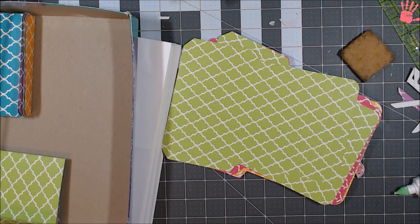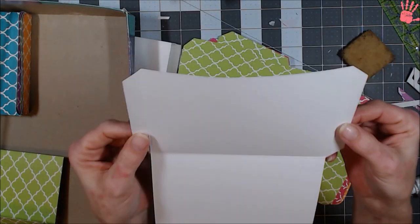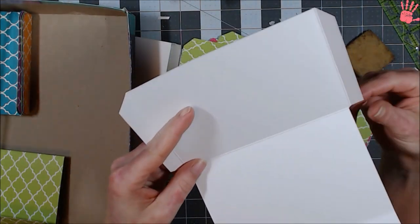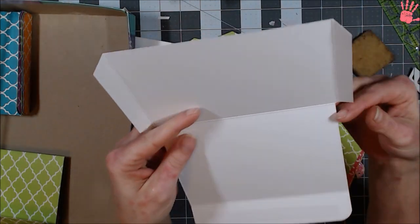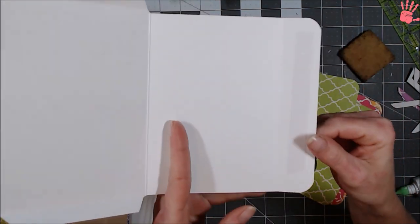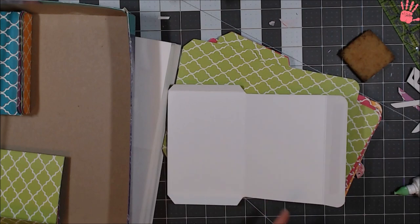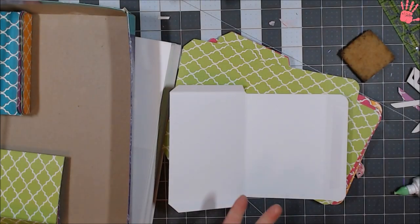And then I trimmed my edges. Trimmed the edge here and then I trimmed it down the sides and used my corner rounder and made them.